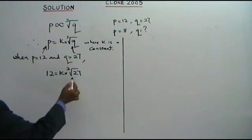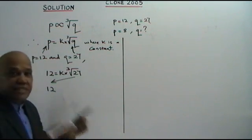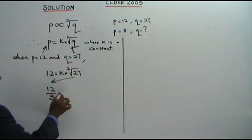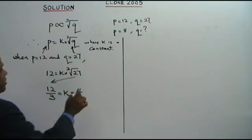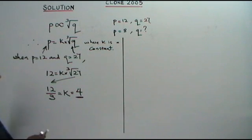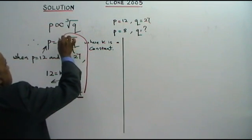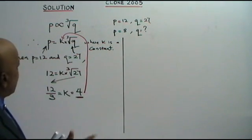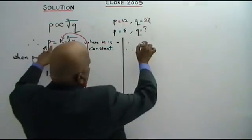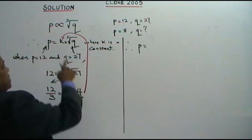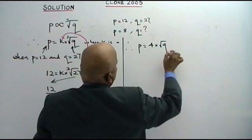What is the cube root of 27? It's 3. So 12 over 3 equals K — K equals 4. We have found the value of K. We substitute K back in, so P is equal to 4 times the cube root of Q.